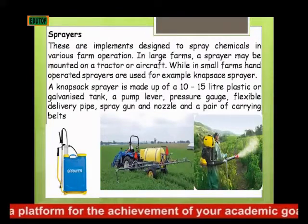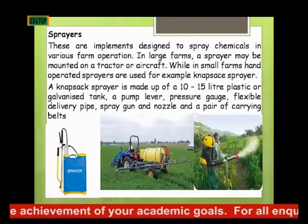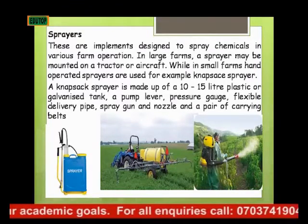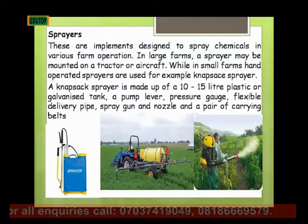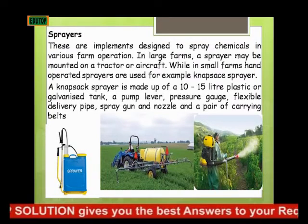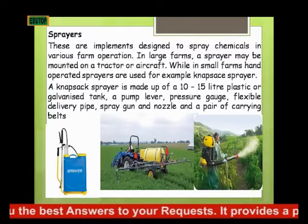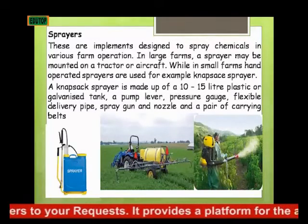In large farms, a sprayer may be mounted on a tractor or aircraft. While in small farms, hand-operated sprayers are used — for example, the knapsack sprayer. A knapsack sprayer is made up of a 10 to 15 litre plastic or fibreglass tank, a pump lever, a pressure dish, a flexible delivery pipe, a spray gun, a nozzle, and a pair of carrying belts.